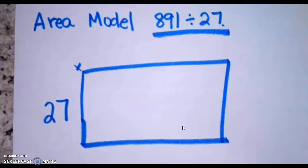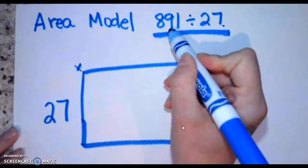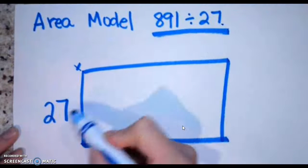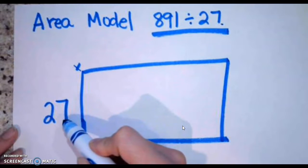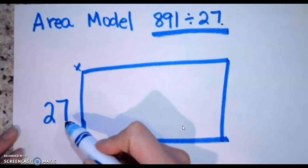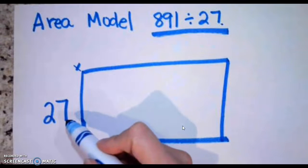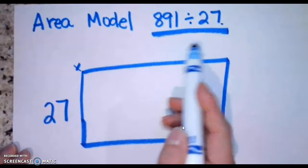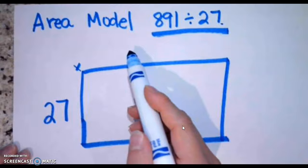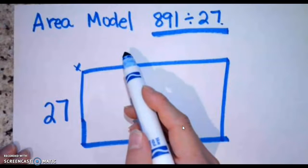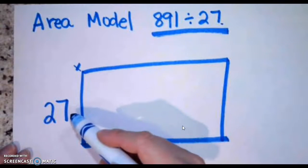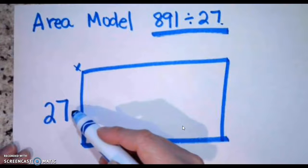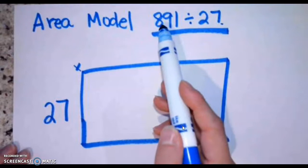I'm going to start with friendly numbers — thinking about multiples of 100 or 10 that I can multiply times 27 to get close to my final answer. I know that 27 times 100 gives me 2,700, which is too much. So I know I'm not going to have any numbers up here that are 100 or more. Let's think about a multiple of 10. I know that 27 times 10 gives me 270 — that's not quite close enough.